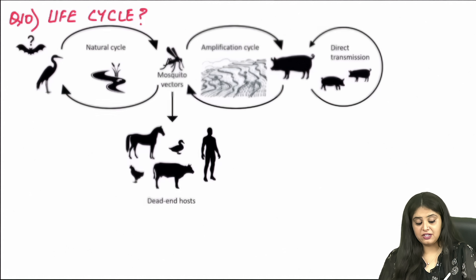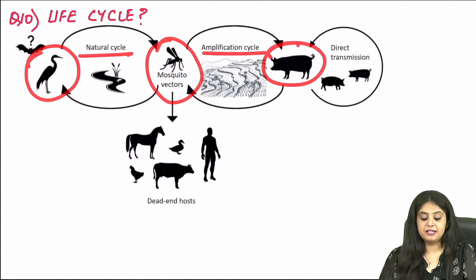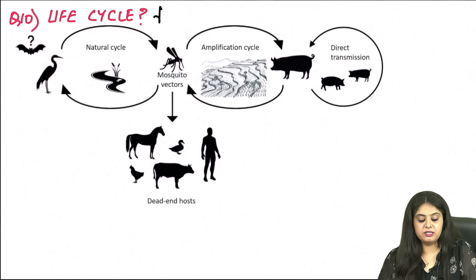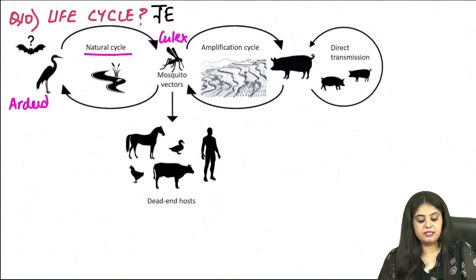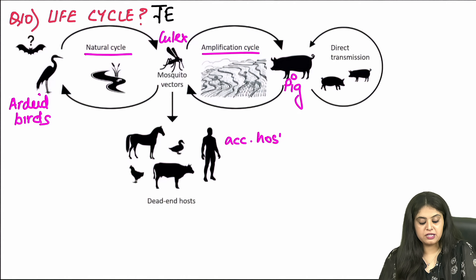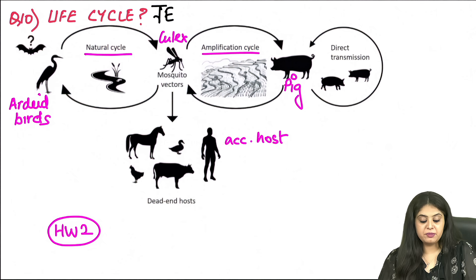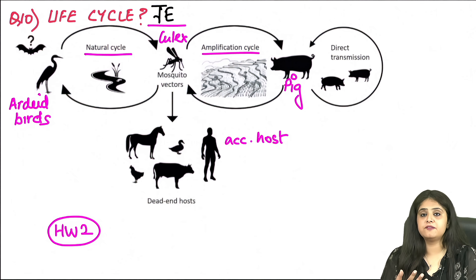The last image is the life cycle of Japanese encephalitis. The vector is the Culex mosquito. The natural cycle occurs with Ardeid birds. Amplification occurs with pigs — when the cycle happens between Culex and pigs, the virus gets amplified, posing a risk to humans, who are the accidental host. The homework for this is to tell me about the new vaccine for Japanese encephalitis — its type (killed or live attenuated), strain, and PSM knowledge.